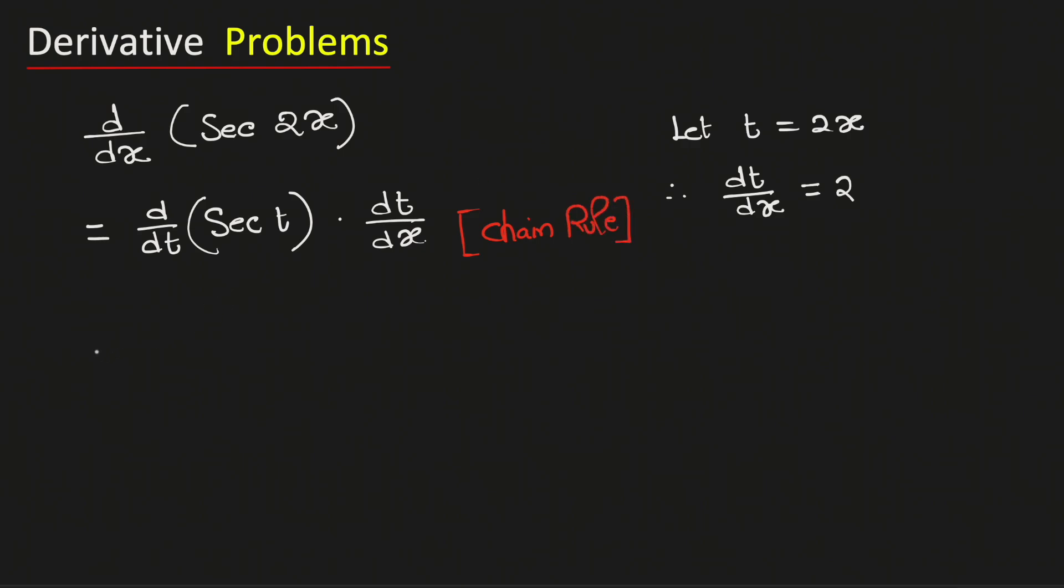Now we know that the derivative of sec t is sec t tan t. And dt/dx is equal to 2.